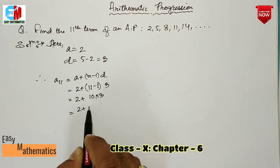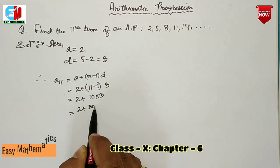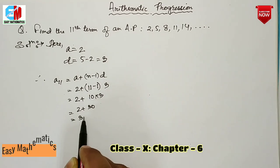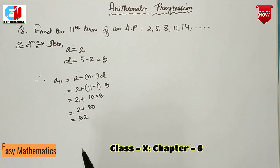This is 2 plus 3 into 10, which equals 30, giving us a final answer of 32.